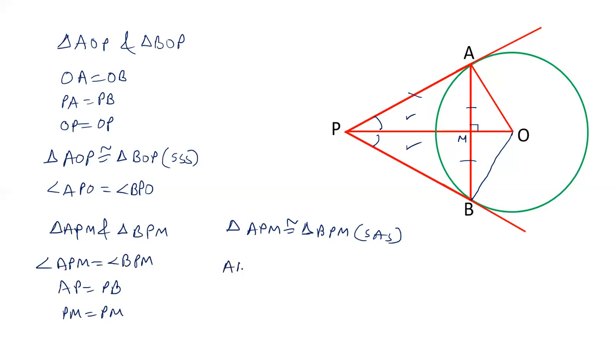And therefore AM is equal to BM. And also angle AMP and BMP are equal. Both are equal to 180 degree and the sum of the two is 180. And therefore each of this is equals to 90 degree. OP is perpendicular to AB. So AM and BM are equal also, and this angle is 90 degree. That is OP is perpendicular to AB, perpendicular bisector.